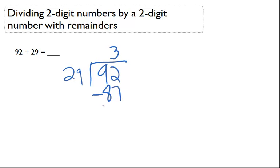92 minus 87 is going to give me actually 5. This is 5.